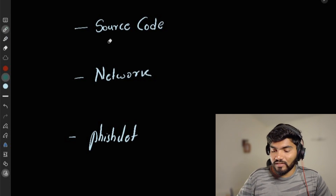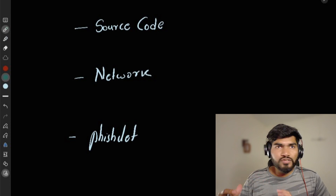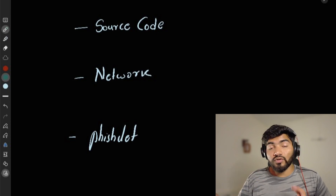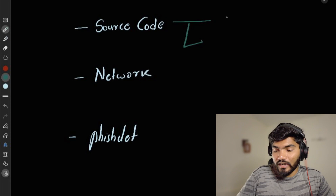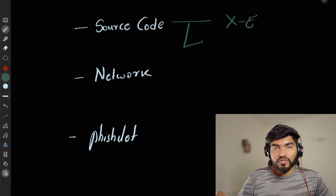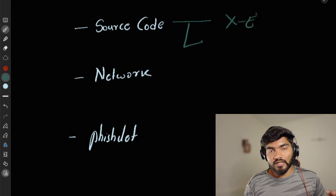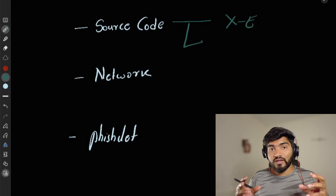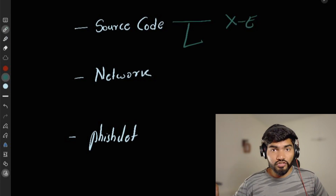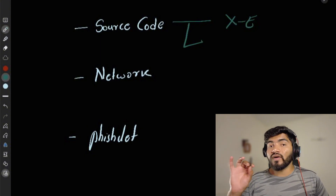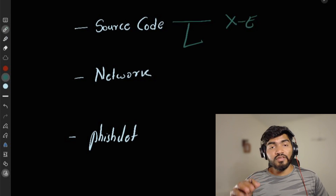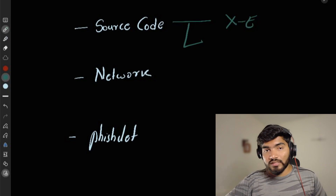Back to the video. The very first reason is the source code. In the evilginx source code there are two things intentionally added by the evilginx developer. The first is the X-E header. Whenever we send a link to the victim and the victim clicks on it, the evilginx server sends that traffic to the original domain — and while doing so, it adds a header called X-E.